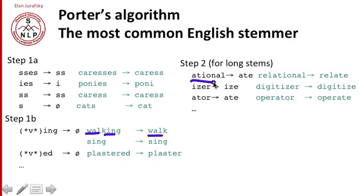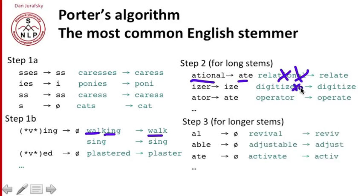There are lots of other such rules. So 'ational' turns into 'ate' — we cross off 'relational' to end up with 'relate.' And 'iser' turns to 'ize,' so we cross off the 'r.' The rules get even more complicated: for very long stems, you remove all of 'revival' and so on.